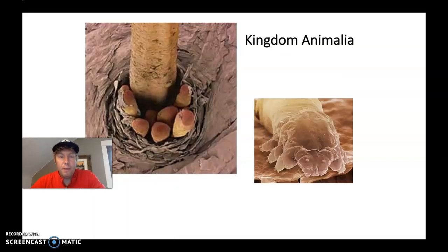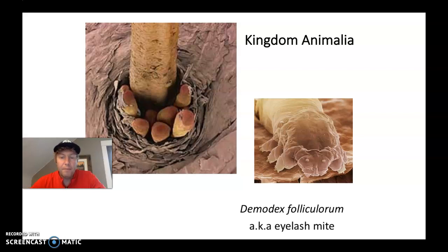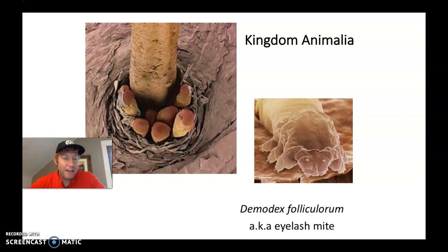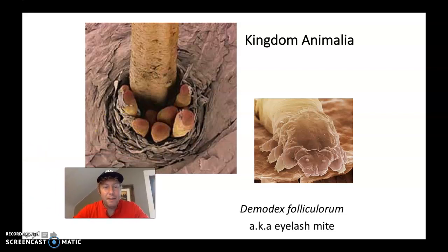Now when we think kingdom animalia, we think about wolves, humans, our dogs, all the big animals. But there are also tiny microscopic organisms in the kingdom animalia. If you look closely, this is an electron microscope image of an eyelash mite, Demodex folliculorum. These little tiny organisms actually live in your eyelashes, believe it or not — I know you probably don't want to think about that, but they do.